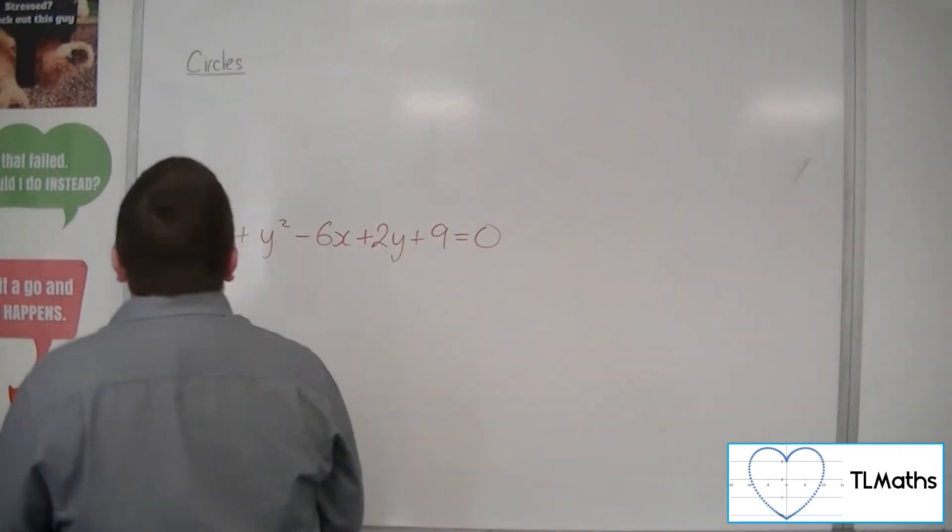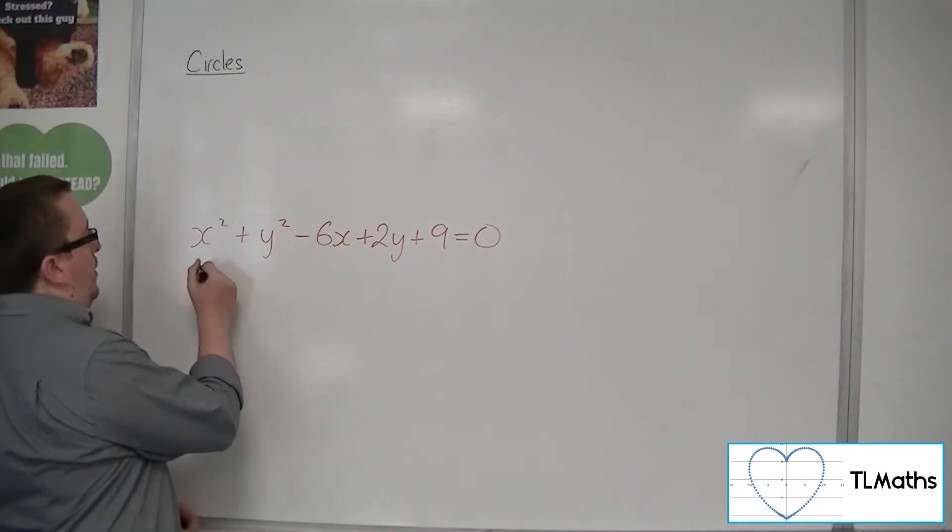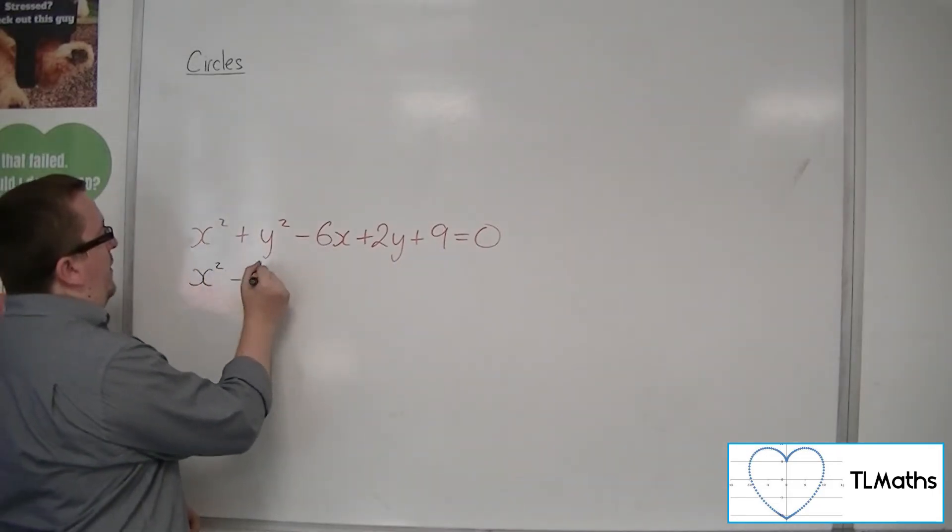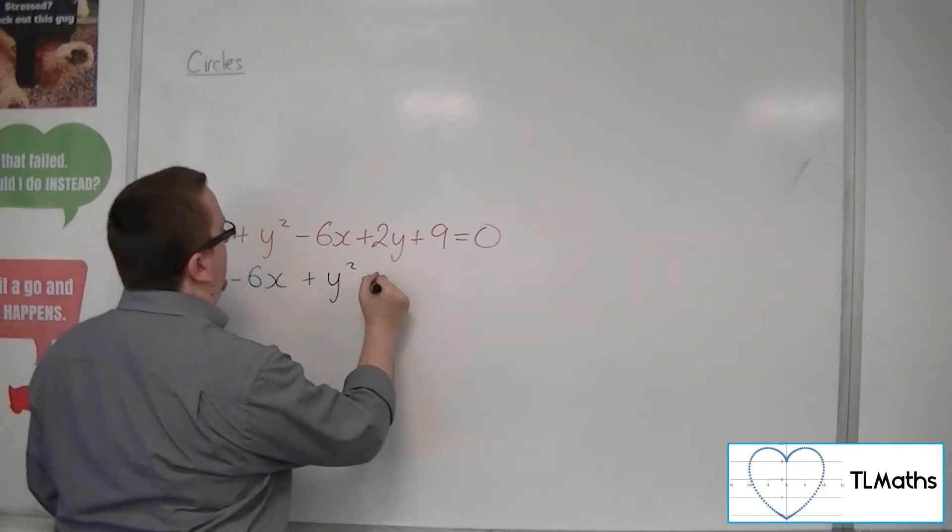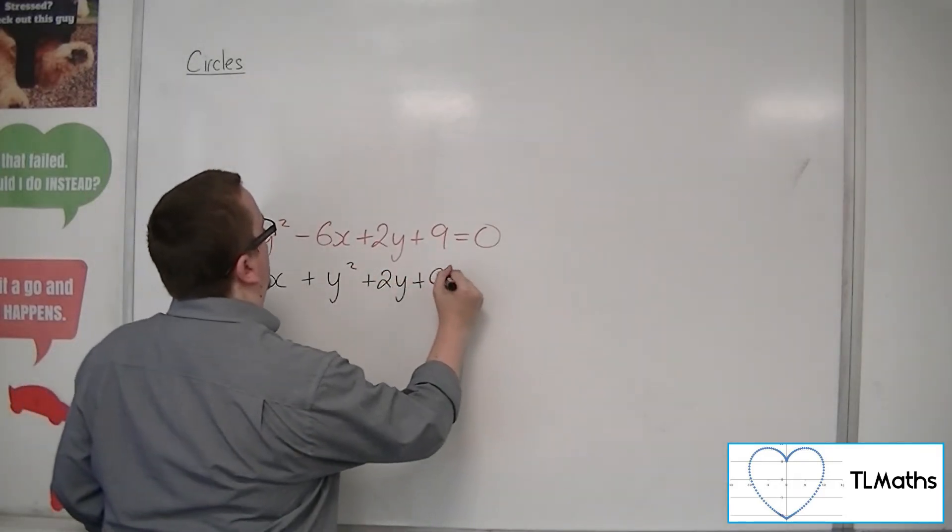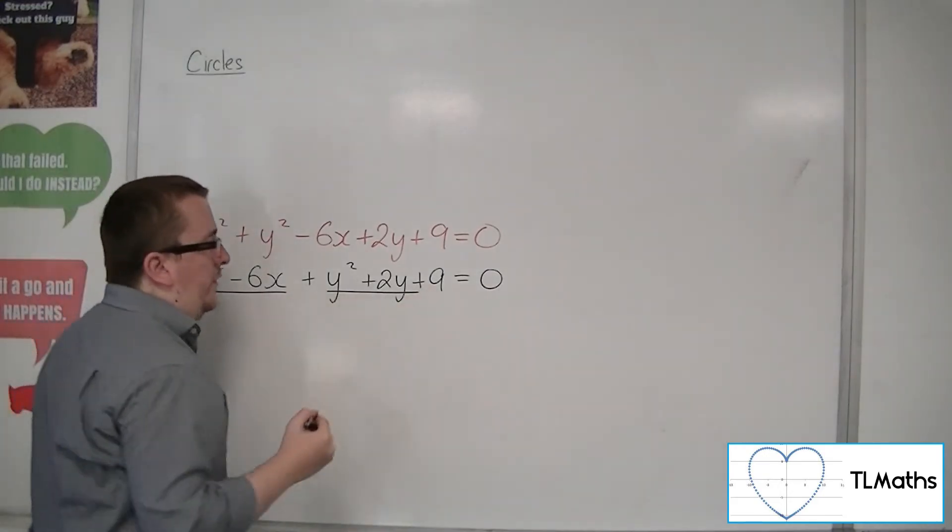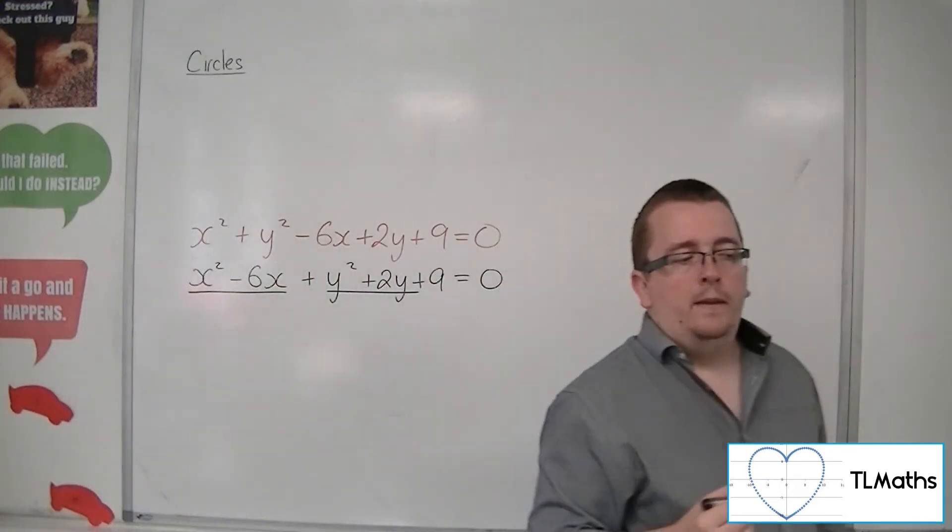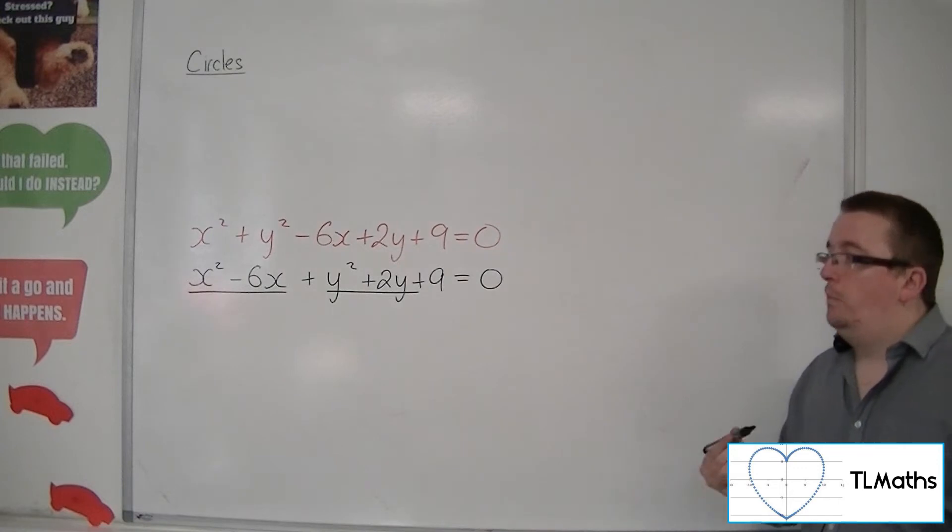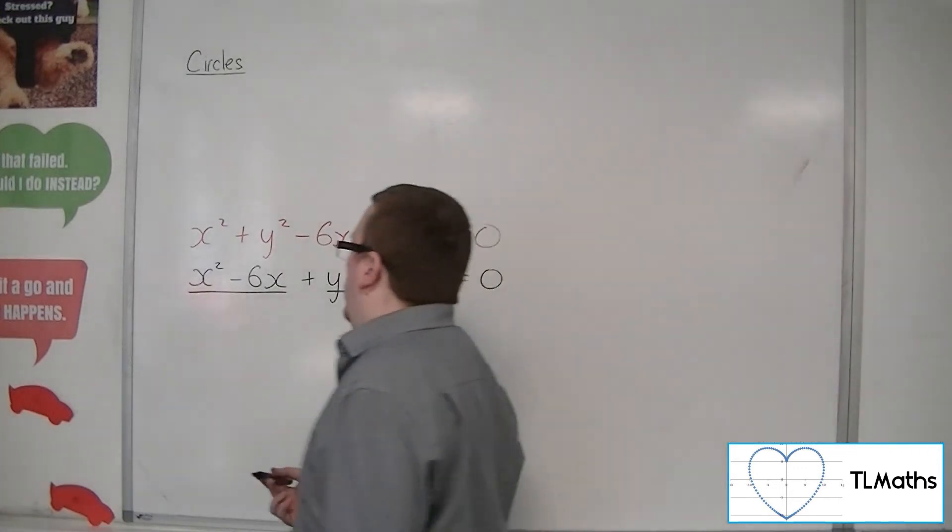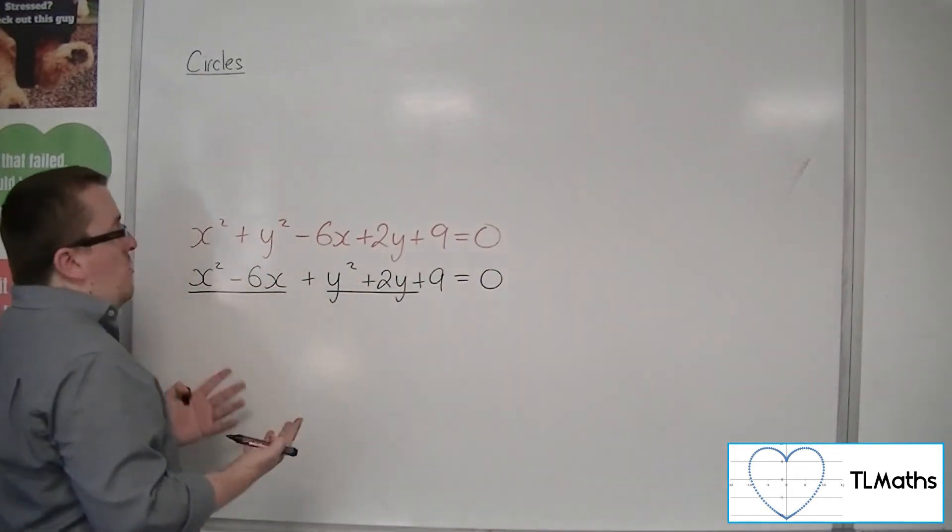What I want to do is group the x's together and the y's together. Then I can consider the x's and y's separately and complete the square for both of them. That will put them back into brackets.